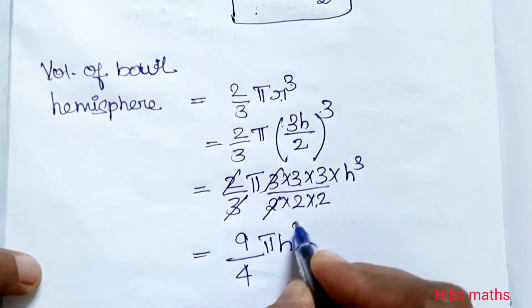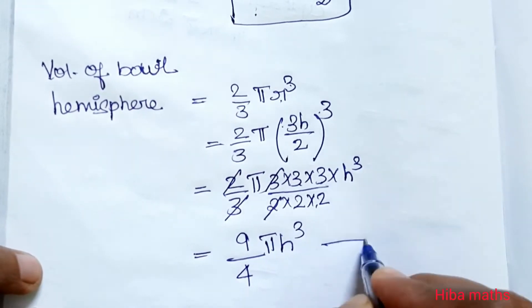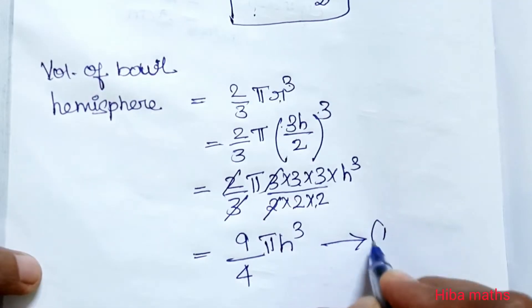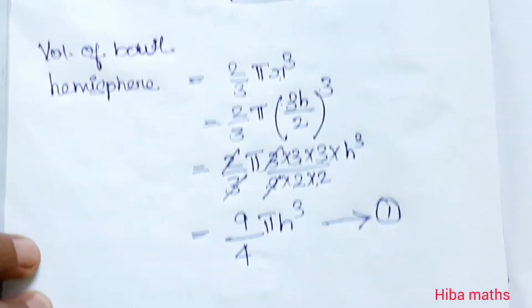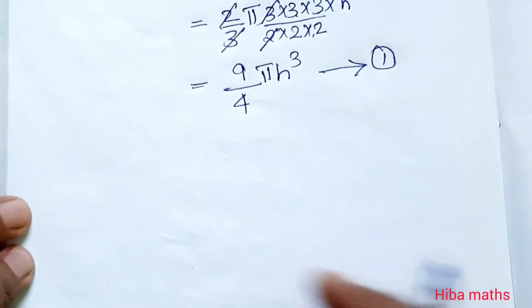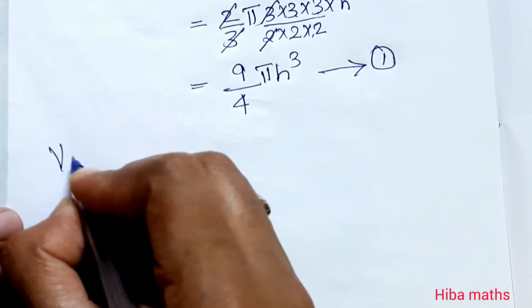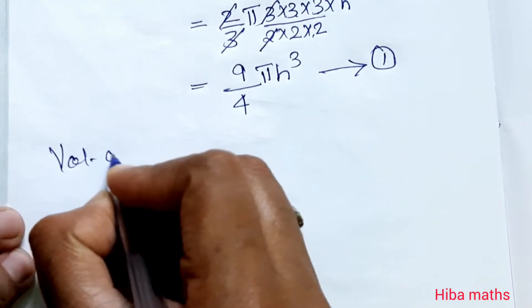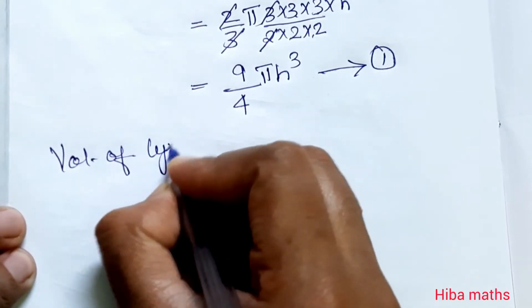This gives us (9/4)πh³ as the first result for the volume of the hemispherical bowl. Now we calculate the volume of the cylindrical vessel.